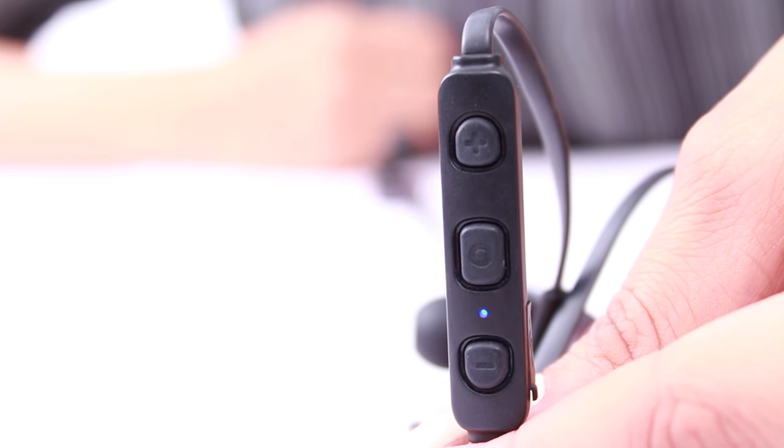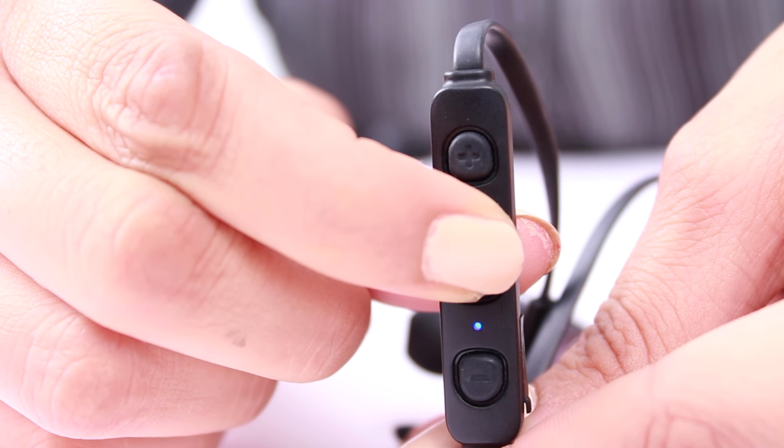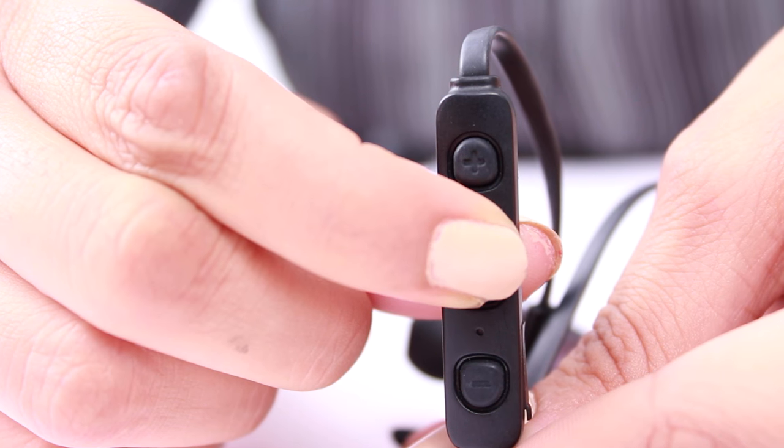To turn the earphones off, simply long press the MFP again. You will hear a voice prompt 'power off,' and the light will turn red before switching off.